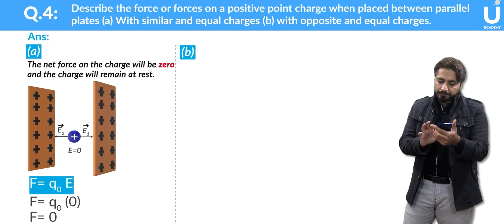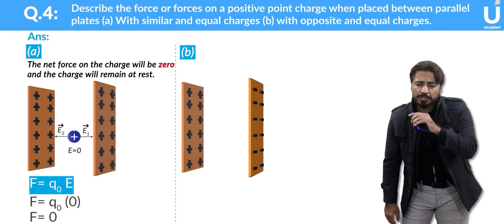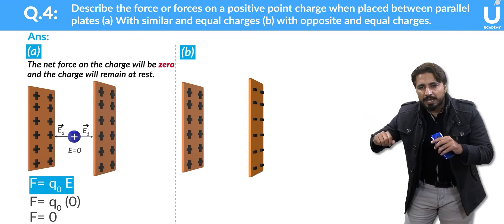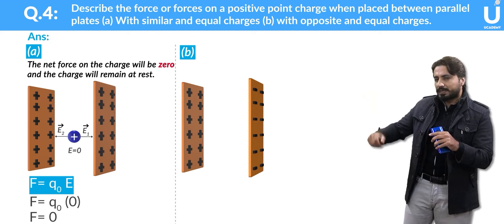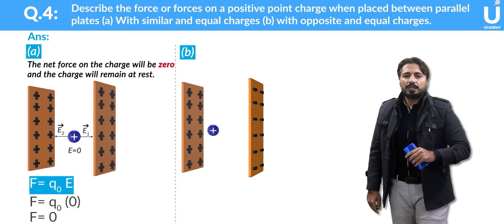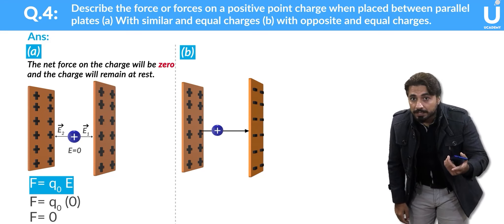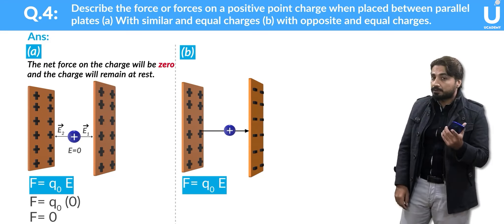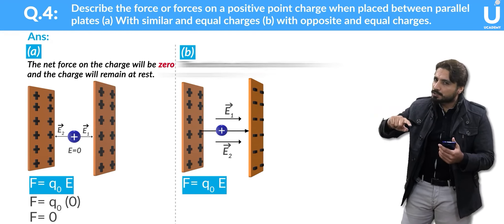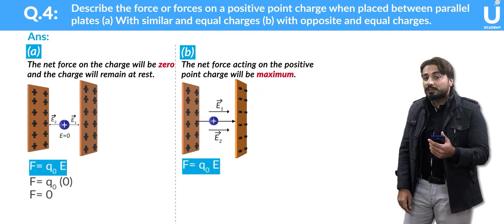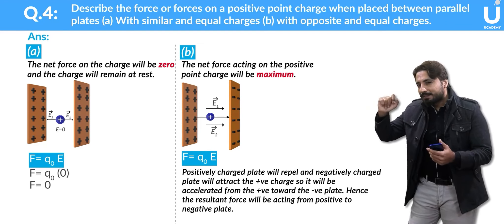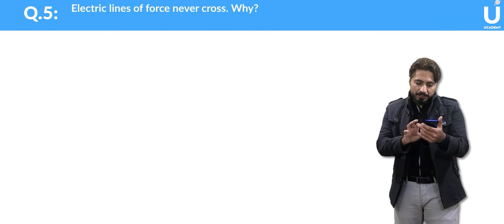Part B: with opposite and equal charges — both plates have equal magnitude but opposite charges: one positive and one negative. The electric field direction is from positive to negative. If you place a unit positive charge in between, using electric force = test charge × electric field, since electric field is not zero, electric force is also non-zero. The force will act in the direction from the positive plate toward the negative plate.